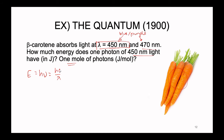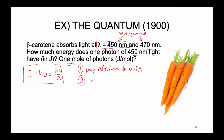Welcome back from the pause. We're going to start solving this problem together. First, we're going to pay attention to the units. We have nanometers, joules, and moles. We want to make sure that all of the units are going to be playing together in the equation we're working with. Then we're going to plug and chug — we should have all the pieces of information and we'll plug them into the equation, making sure everything we don't want cancels out and everything we do want remains.